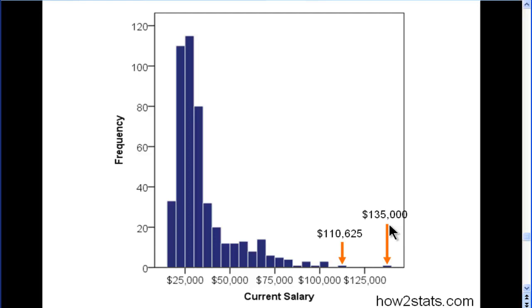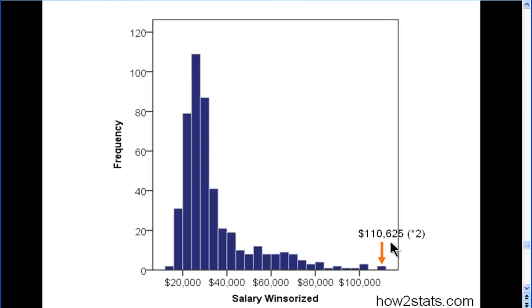These are all legitimate values. It's just the nature of salary data that there are outlying observations. So to get rid of this problem that might affect our statistical analyses, we just add an extra person to the value of $110,625.